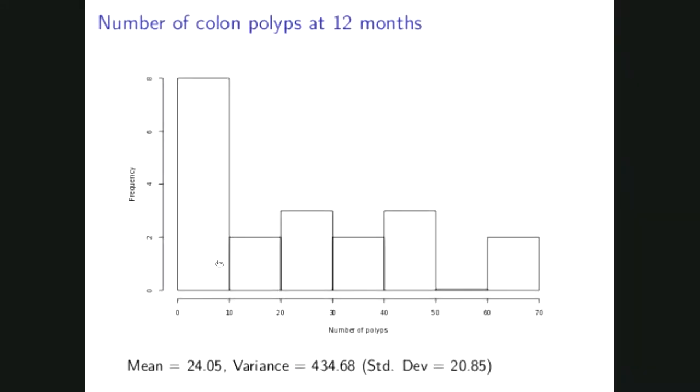We can see that the number of colon polyps, most of them are in this bin between zero and ten, but then we have this wide spread of the counts on the right tail of the distribution.